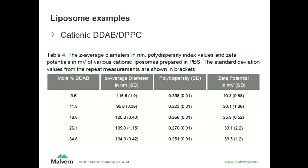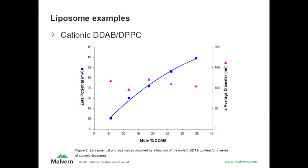You can also do cationic liposomes — various ratios of the surfactants — and what you then see is that the zeta potential, this time in blue, depending on how much DDAB you add, the more positive your charge gets, while the size stays relatively constant in this case.